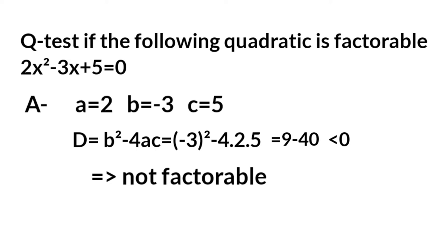Here a = 2, b = -3, c = 5. D = b² - 4ac = (-3)² - 4(2)(5) = 9 - 40 < 0, means not factorable.